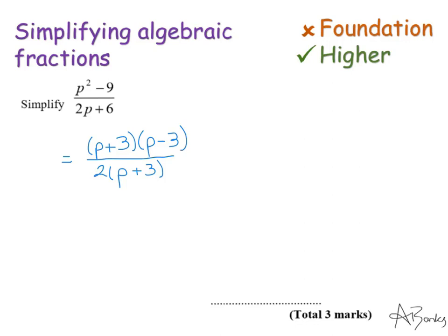So this time what cancels out is the p add 3 there and there. And I'm just left with p minus 3 over 2. And that's my answer. So not any more difficult or easy, it's just a bit different. And you've got to watch out for that difference of two squares.